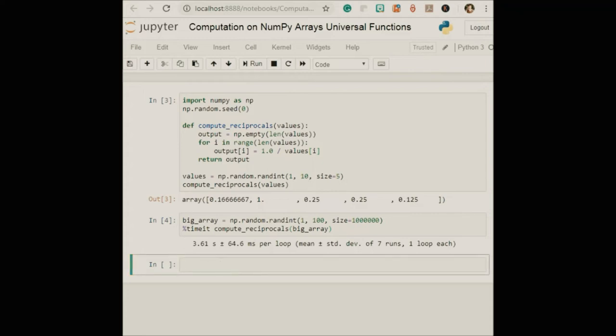Now let's introduce ufuncs - introducing ufunctions known as ufuncs. So for many types of operations, NumPy provides a convenient interface into just this kind of statically typed compiled routine. This is known as vectorized operation. You can accomplish this by simply performing an operation on the array which will then be applied to each element. This vectorized approach is designed to push the loop into the compiled layer that underlies NumPy, leading to much faster execution.